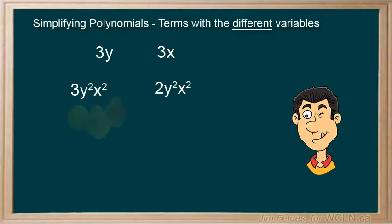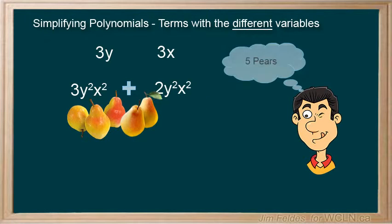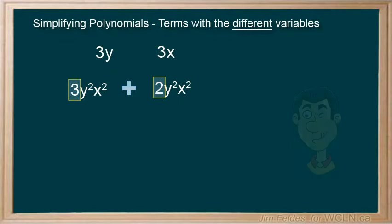Maybe they represent pairs. We have 3 plus 2 equals 5 pairs. So when the variable parts are the same, we simply combine the values of their coefficients, which in this case would get us 5y²x².